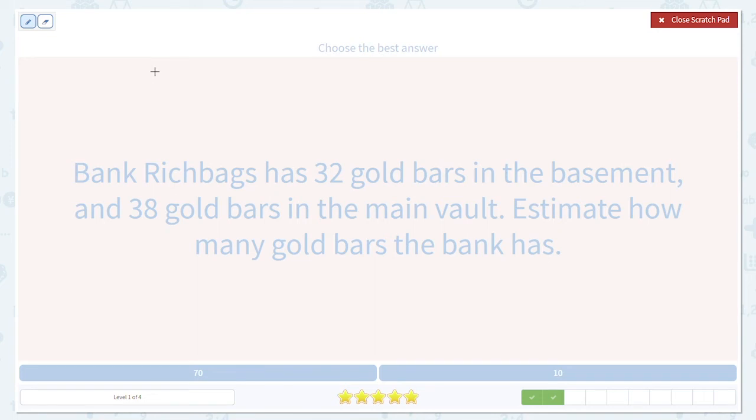So again, we have to combine the two numbers of gold bars. 32 plus 38. Let's estimate it.